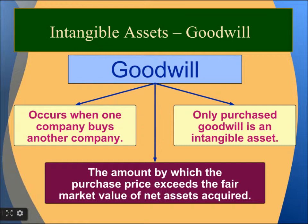What is Goodwill? Goodwill occurs when a company buys another company. Only purchased Goodwill is an intangible asset — it is the amount by which the purchase price exceeds the fair market value of net assets acquired.